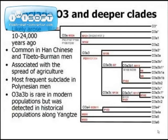Subclade O3a is still relatively common in East Asian men, particularly among Han Chinese communities and Tibetan-Burman groups. Subclade O3 is strongly associated with the spread of farming into China, and perhaps the ancestors of this subclade were the first rice farmers in China. Subclade O3 is the most common haplogroup O subclade detected in Polynesia. Subclade O3a3b is quite rare in modern populations, but was detected during analysis of ancient remains from archaeological sites along the Yangtze River in China.